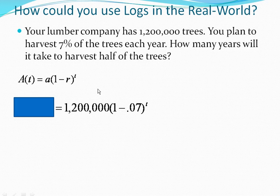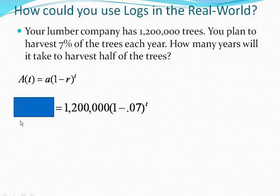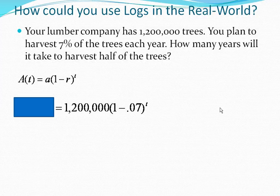Also think about what does it mean or how many trees will you have left after you harvest half of the trees, because that's going to be some other information that we need. So if we start with 1.2 million, half of them will be 600,000.